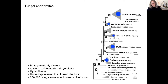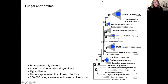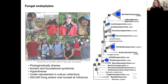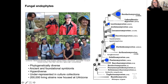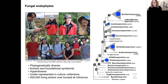Today we know that endophytes are likely hyper-diverse — representing hundreds of thousands of species. They're underrepresented in culture collections, in part because of their lifestyle of simply living inside healthy tissue and not necessarily fruiting while that tissue is alive. Over the past 20 years, I've been fortunate to work with wonderful collaborators — including Francois Lutzoni, Jana Uren, Chuzo Oita, Jim Dalling, Carolina Sarmiento, and Camila Salamanca — to collect endophytes at a nearly global scale.